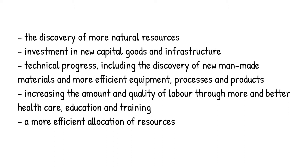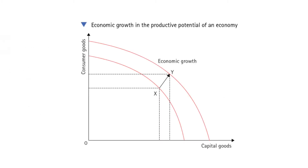Long-term growth is also achieved by increasing the amount and quality of labor through more and better healthcare, education and training, and through a more efficient allocation of resources. Remember the production possibility curve — an increase in any of the above factors would increase the PPC. This curve can also be used while answering questions in your exam.